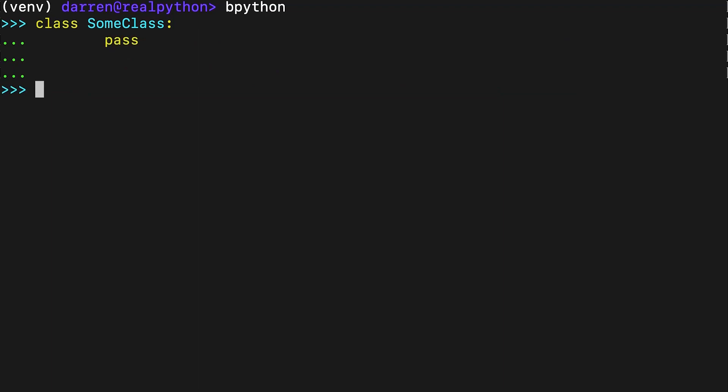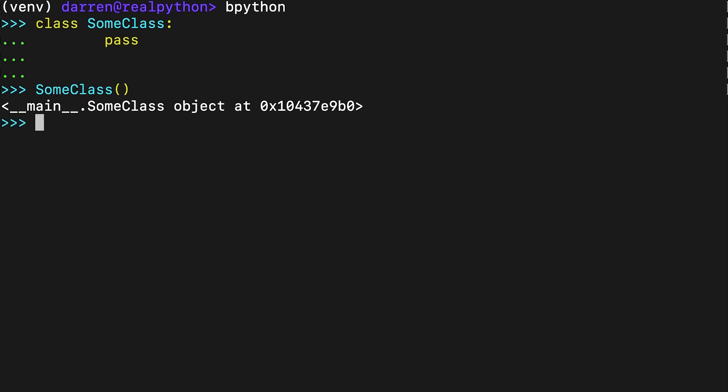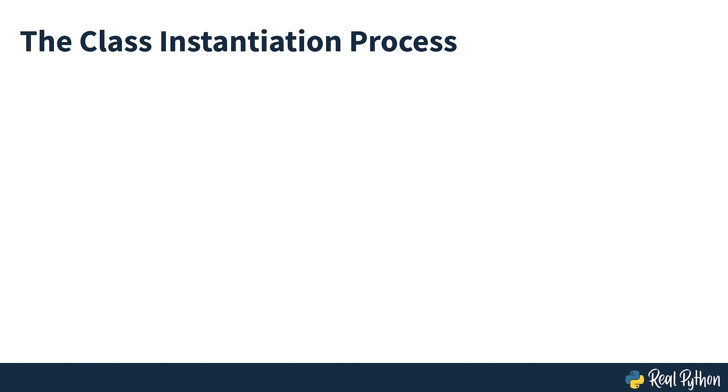In this example you define some class using the class keyword. This class is currently empty because it doesn't have any attributes or methods — the class body only contains a pass statement as a placeholder. Then you create a new instance of some class by calling the class with a pair of parentheses. In Python, when you call a class you're calling the class constructor, which creates, initializes, and returns a new object by triggering Python's internal instantiation process.